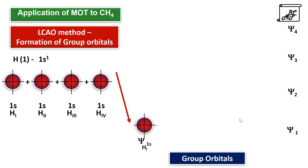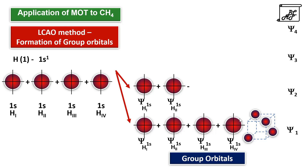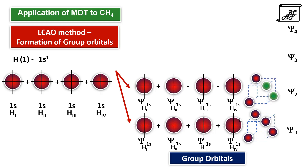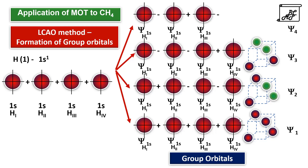Psi1 is formed by the addition of 1s orbitals of all the hydrogen atoms, where hydrogen atoms are at the alternate corners of a tetrahedron. Psi2 is formed by 1s + 1s − 1s − 1s, with hydrogen atoms arranged accordingly. Psi3 is formed by 1s − 1s − 1s + 1s. Finally, psi4 is formed by 1s − 1s + 1s − 1s, with hydrogen atoms arranged in this fashion.